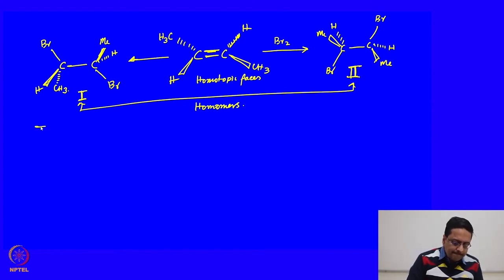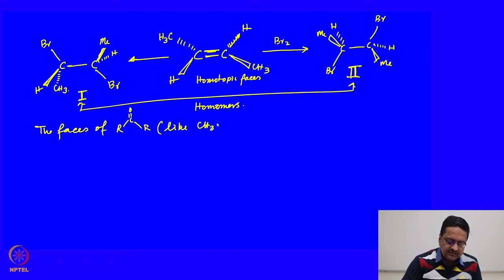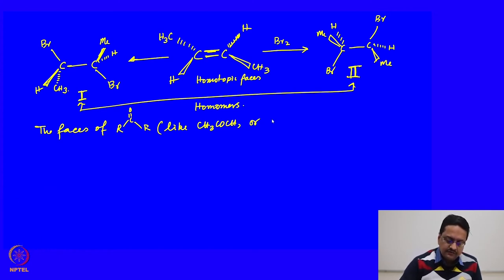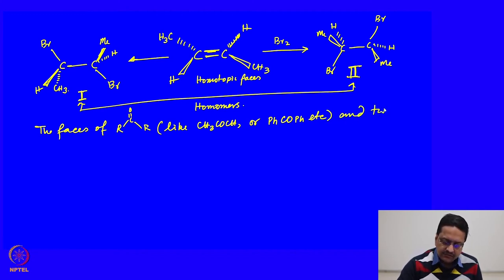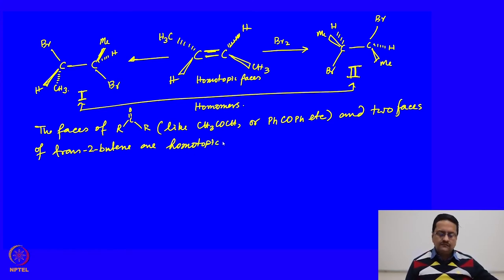Similarly, the faces of R–C=O groups such as CH₃COCH₃ (acetone) or benzophenone (PhCOPh), and the two faces of trans-2-butene, are homotopic.